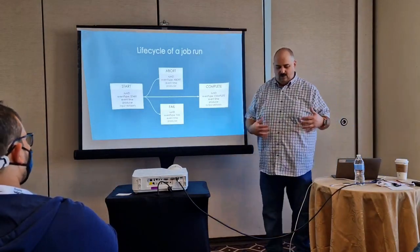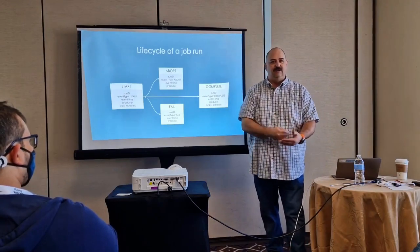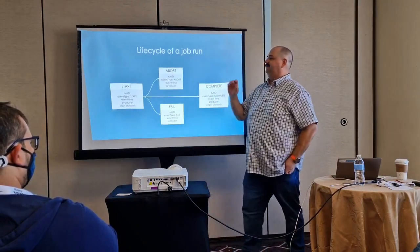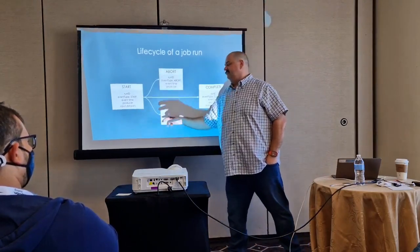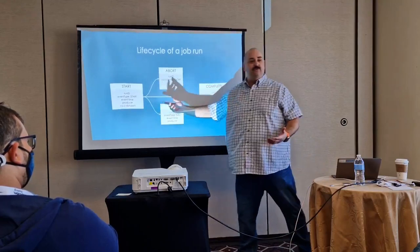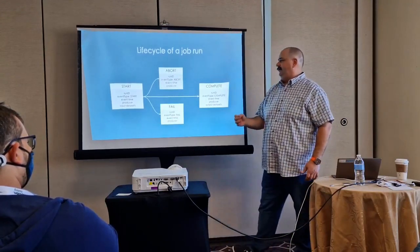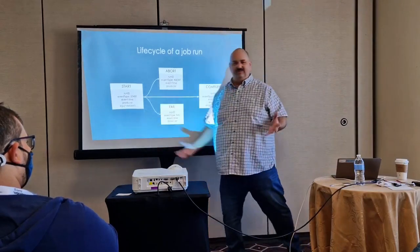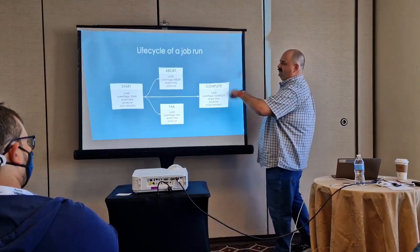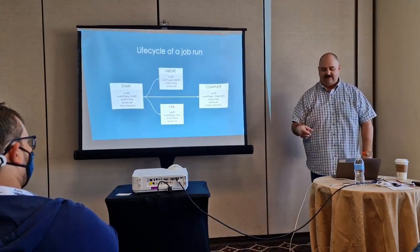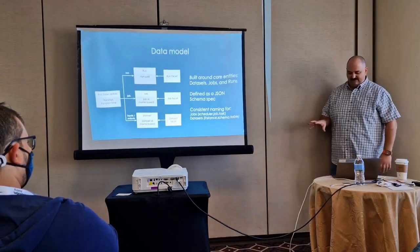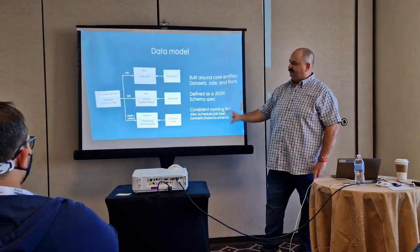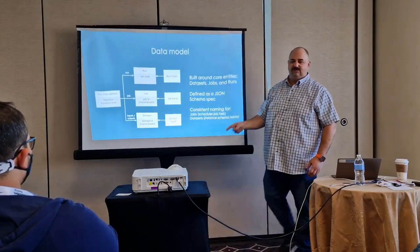Each job run has a life cycle. Open Lineage is observational, meaning every lineage update says a job started or a job stopped — they're all about job life cycle. The first thing you'll send is a start event with event type of start, time, the producer, and perhaps your input data sets. When the job is complete, you send a complete event — maybe now you know your output data sets. At each phase along the life cycle, you can augment it with additional metadata about input and output data sets.